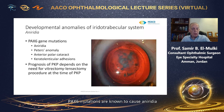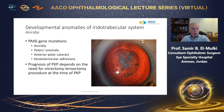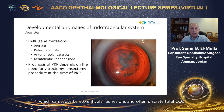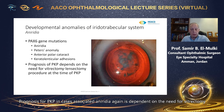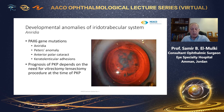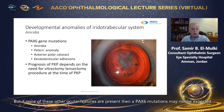PAX6 mutations are known to cause aniridia, and cases of Peter's anomaly have been described to have PAX6 mutations also. Congenital corneal opacities may be associated with aniridia, which can also be associated with anterior polar or pyramidal cataracts causing keratolenticular adhesions and often discrete focal CCO. Prognosis for PKP in cases associated with aniridia is dependent on the need for vitreoretinal surgery at the time of PKP and the onset of glaucoma, both of which confer poor prognosis. If a child with CCO has aniridia, anterior polar cataract, and nystagmus, a PAX6 mutation may well be expected; if none of these features are present, a PAX6 mutation may not be expected.